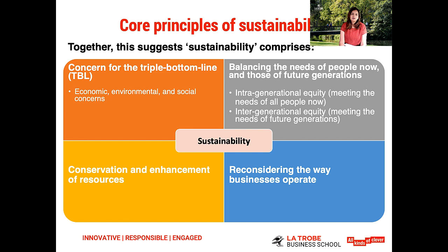From the Brundtland definition, we can start to build a picture of what sustainability comprises. We can see that sustainability requires a concern for the triple bottom line — in other words, the related concepts of the economy, the environment, and society. It also highlights an equitable balance of current and future generations' needs, or what we call inter- and intra-generational needs. Intergenerational equity refers to equity considerations between current and future generations, while intra-generational equity relates to considerations among current generations.